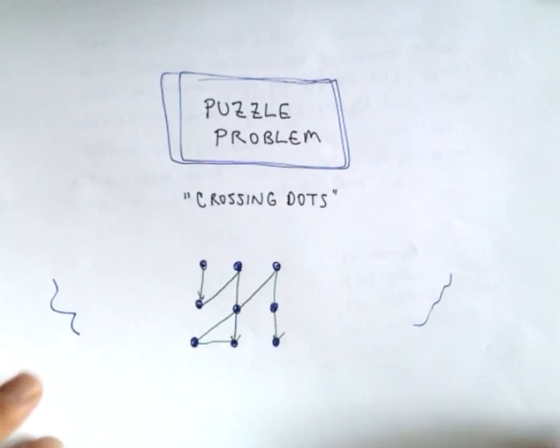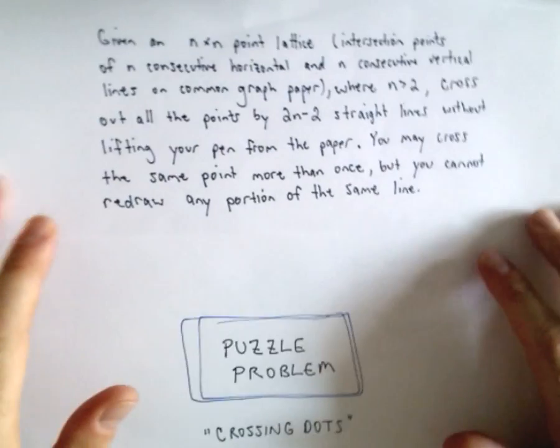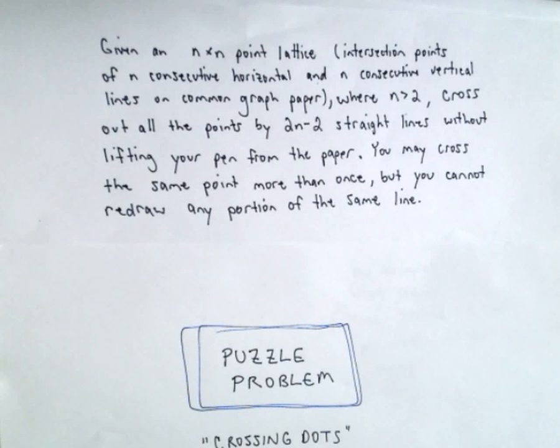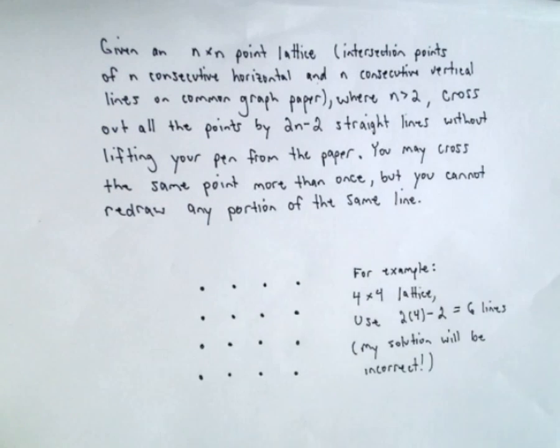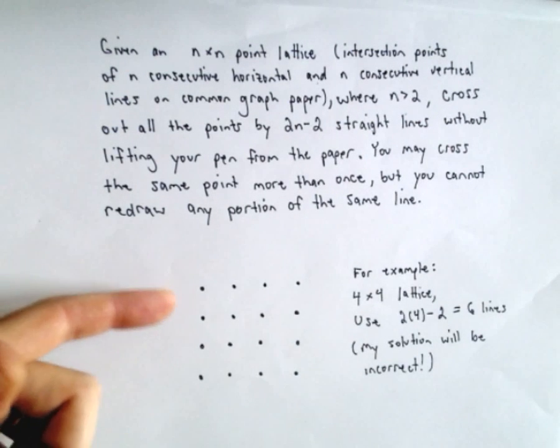So in the crossing dots problem, what we do is we've got an n by n point lattice. The idea is it's the intersection points of n consecutive horizontal and n consecutive vertical lines on common graph paper, so basically we've got a bunch of dots. For example...